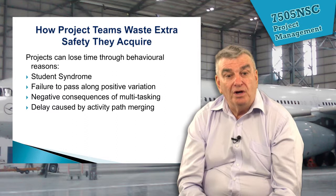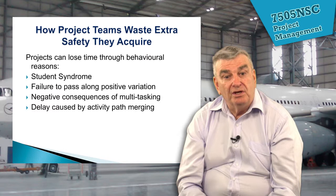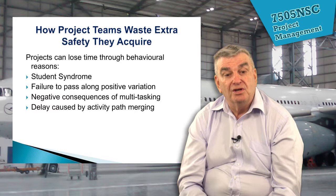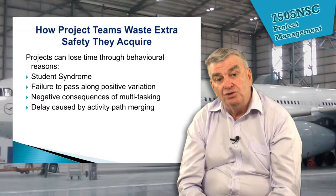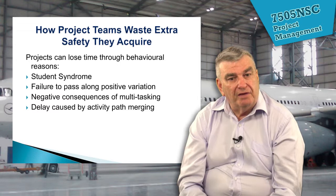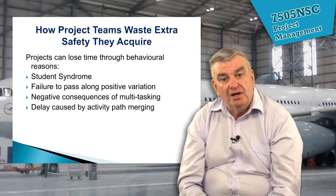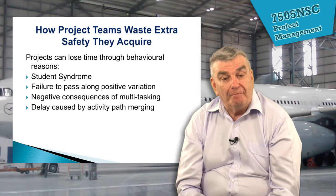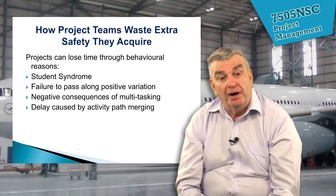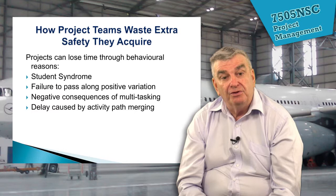The third is the negative consequences of multitasking — a person might be working on three different projects, doing a little on project A, then B, then C. By the time they come back to project A they've lost some memory of it and have to catch up, so time is wasted. The fourth is delays caused by activity path merging: there might be a delay on someone's path in a parallel network, so a person is left waiting even though they're ready to finish, and time is wasted. We'll look at these in detail.